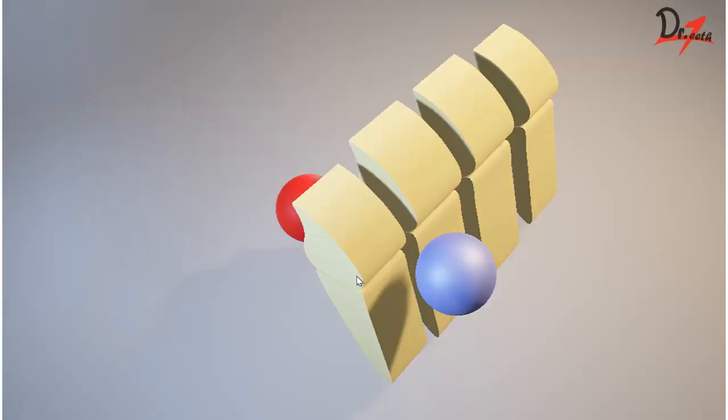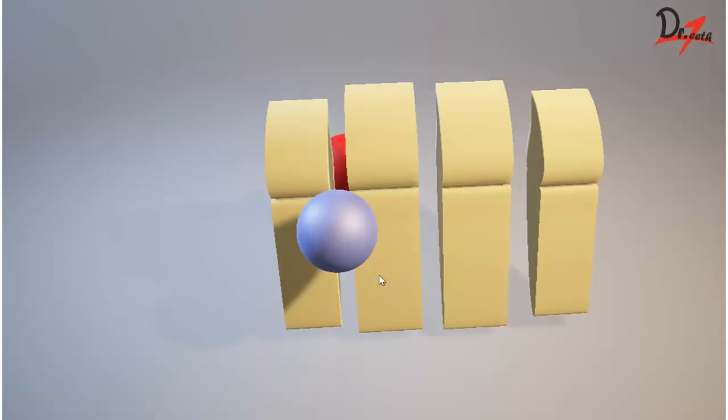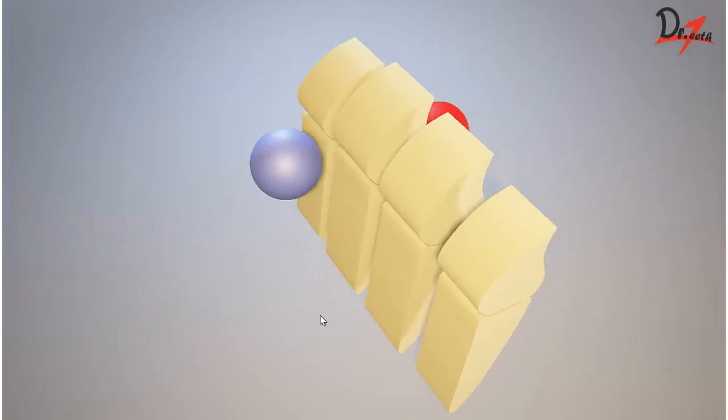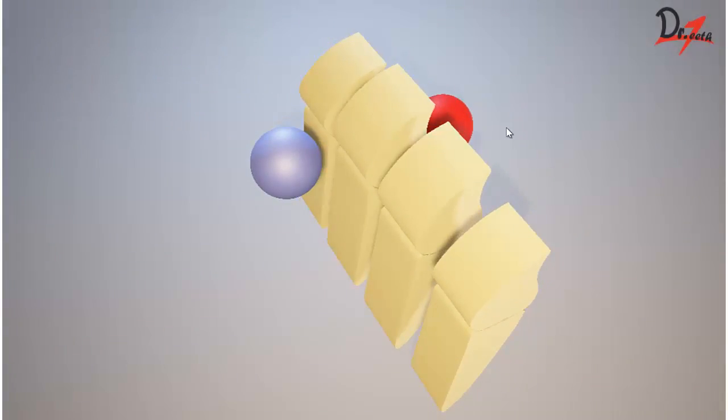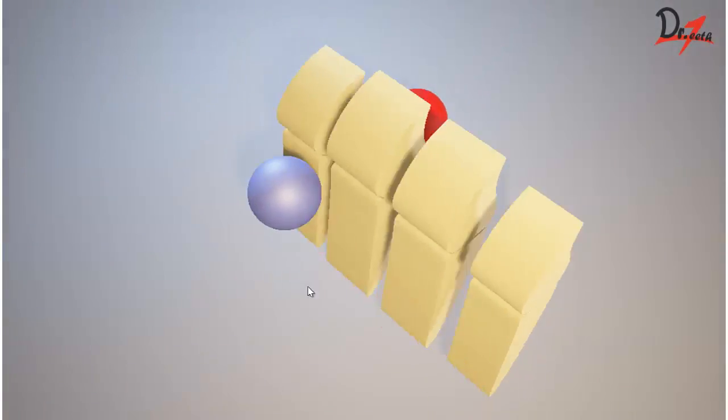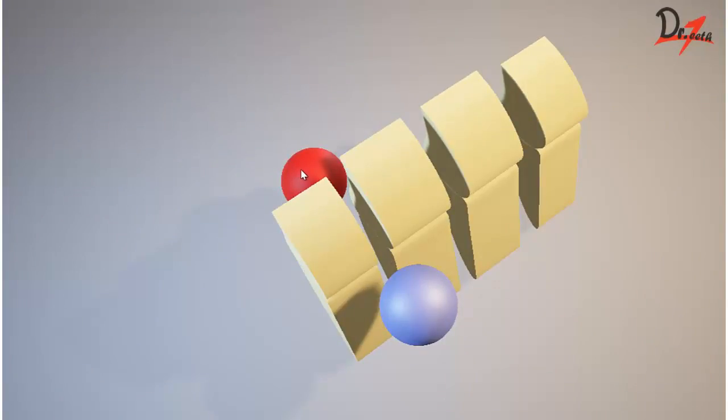When the tube head was moving mesially, this object was also moving mesially. And when the tube head was moving distally, this object is also moving distally, and this object is the lingual object. The lingual object moves in the same direction as you are moving the PID. That is why we say same lingual, opposite buccal.